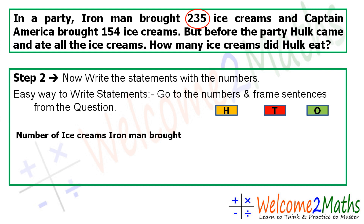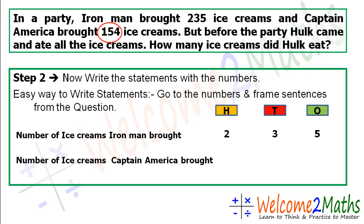The number of ice creams Iron Man bought. So the statement is: 'Number of ice creams Iron Man bought,' and we write the number starting from the ones place. The next number is 154 — the number of ice creams that Captain America bought. So the statement is: 'Number of ice creams Captain America bought,' and we write the number starting from the ones place. We always write numbers from the ones place, as we learned in our last lecture in the addition class.